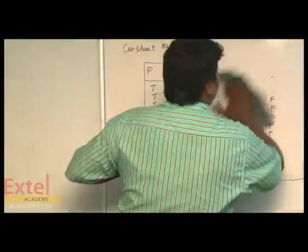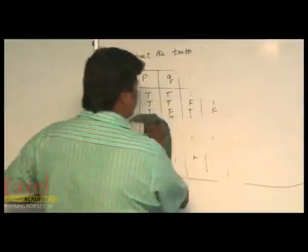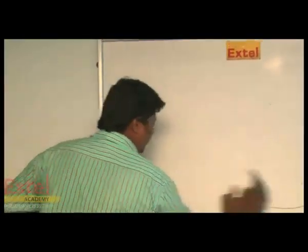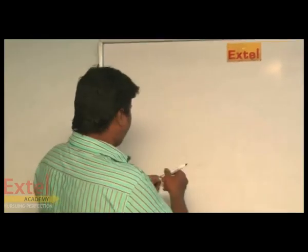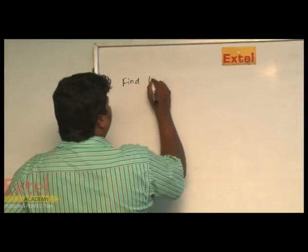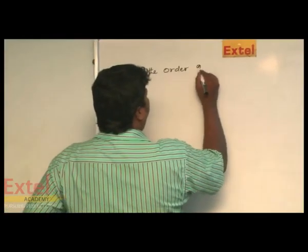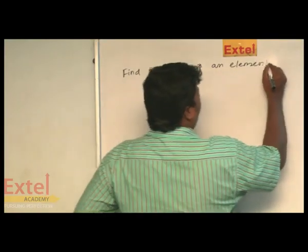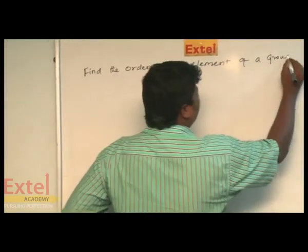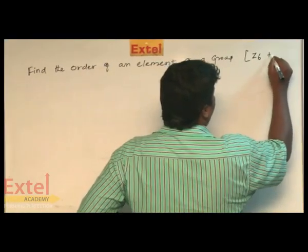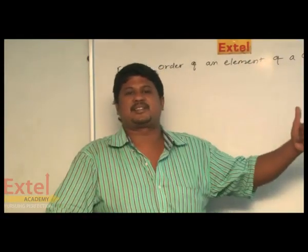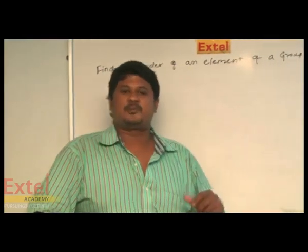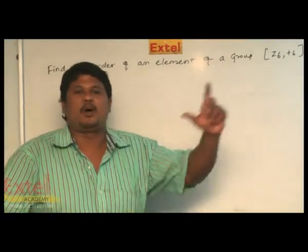We will pass on to the next problem. This is all about the Cayley table. In 6 months there is a chance of getting some questions like this. First one: find the order of an element of a group Z6, that is (Z6, +6), which means Z6 with addition modulo 6.